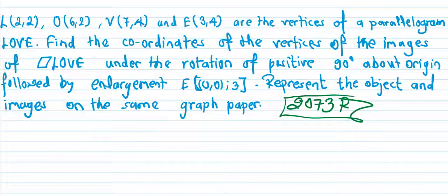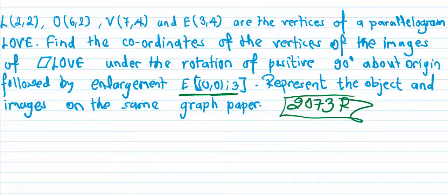The new coordinates will go under the rotation of positive 90 degrees — first of all, rotation about positive 90 degree about origin — followed by enlargement about origin, center at (0,0), with scale factor 3. So the enlargement scale factor is 3.